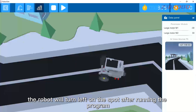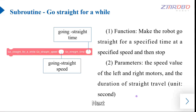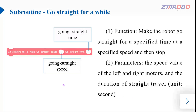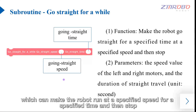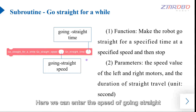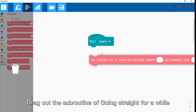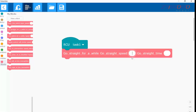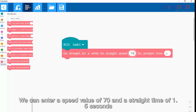Next let's learn the subroutine of going straight for a while, which can make the robot run at a specified speed for a specified time and then stop. Here we can enter the speed of going straight, and here we can enter the duration of the straight line. Drag out the subroutine of going straight for a while and enter a speed value of 70 and a straight time of 1.5 seconds.